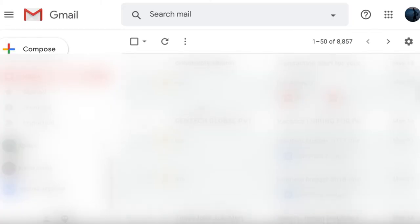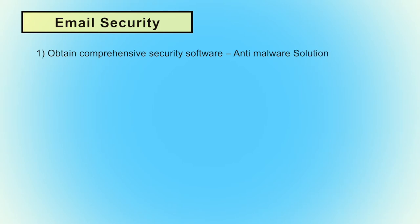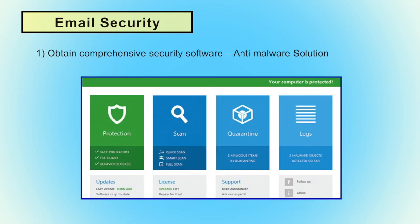Before going to the tips and guidelines for social networking websites, email is the main medium where each and every user has an email and most communication is done through emails. I will stress upon what kind of security practices the user has to follow or implement for their emails. First, obtain a comprehensive security software like an anti-malware solution to protect your system as well as the email accessed from your machine.